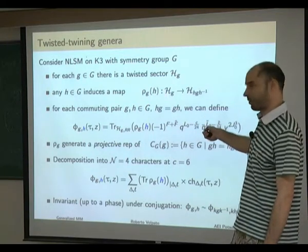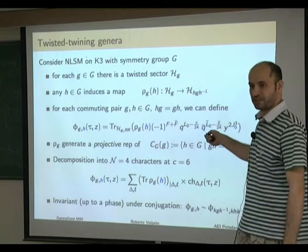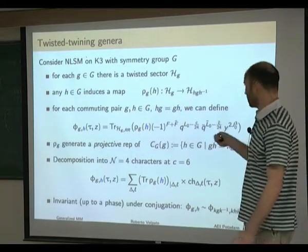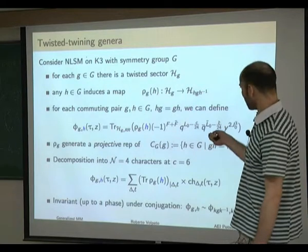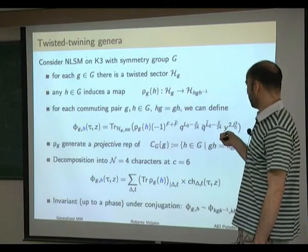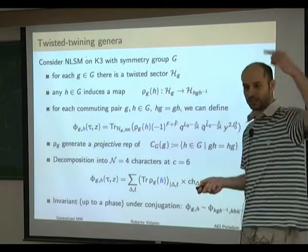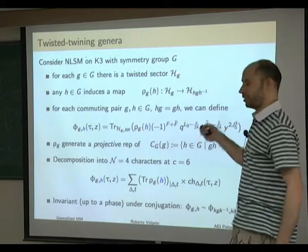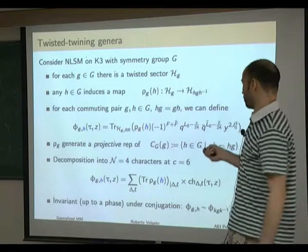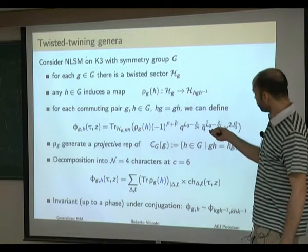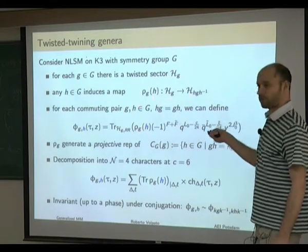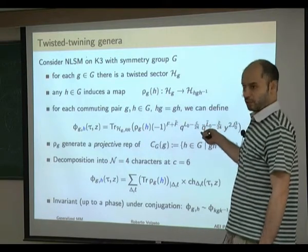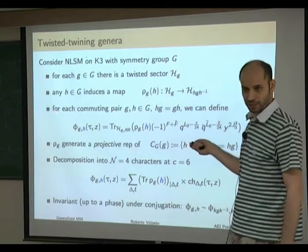For each symmetry G we can take a twisted sector H_G. If we take another symmetry H, it induces a map on the twisted sectors: the map goes from the G-twisted sector to the HGH^{-1}-twisted sector, and this is an isomorphism. This shows that the twisted sector depends on the conjugacy class of G in the group, up to isomorphisms. It also shows that if H commutes with G, we have a map from H_G to itself, and it makes sense to take a trace — this is how we define the twisted twining genus.